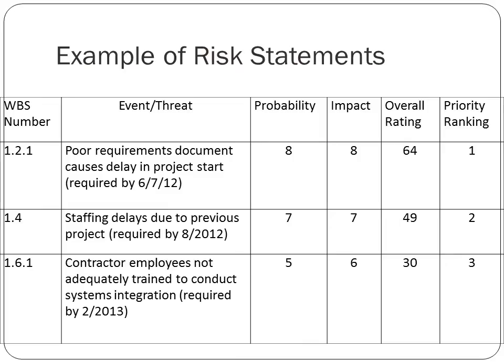Here are some examples of risk statements. We've used a simple Excel spreadsheet to record these. First, we record what task or part of the work breakdown structure we're discussing, and what the event or threat is to that particular task. The probability of it happening is assigned on a scale of one to ten. Similarly, the impact on a scale of one to ten, and we multiply those two together to get an overall rating. We do this for all the risks identified and then have a priority ranking of them subsequently.